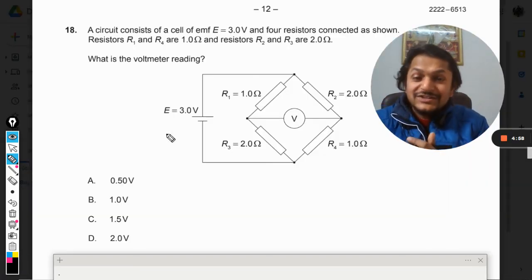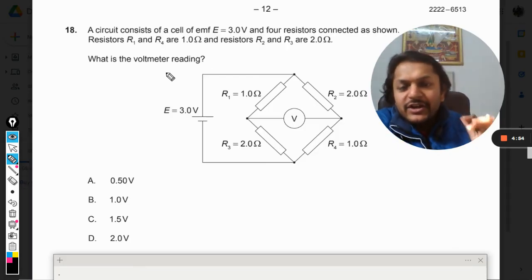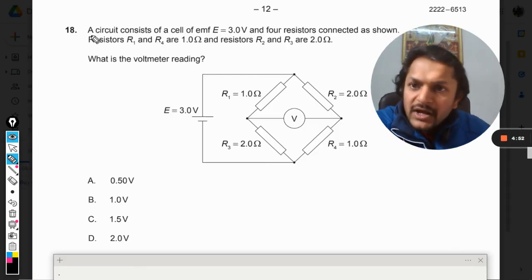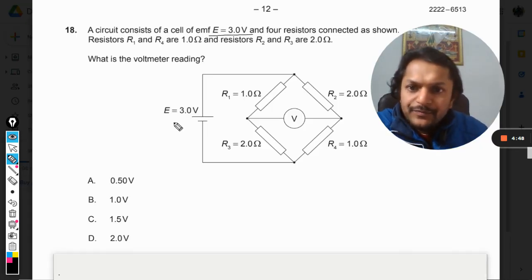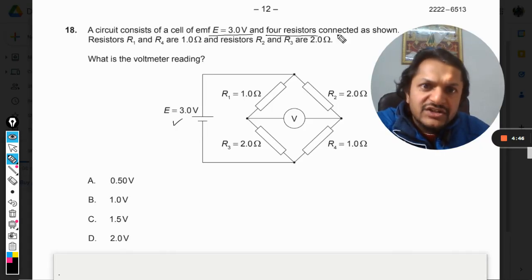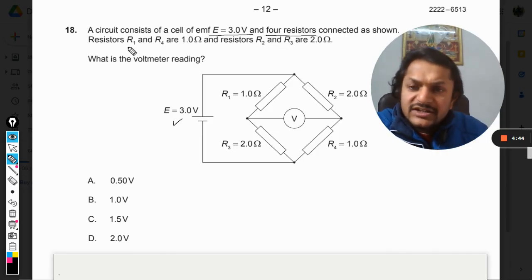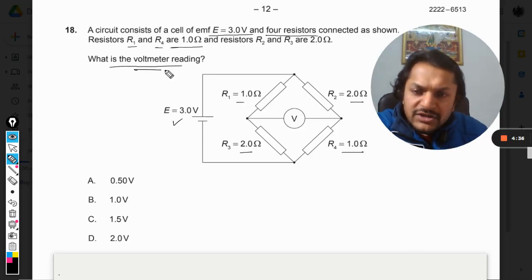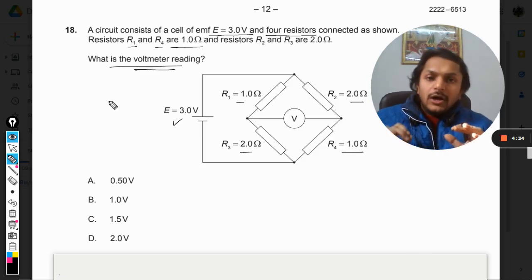Okay dear students, this is another mind-blowing question on your screen. Let us concentrate on how to do this question. A circuit consists of a cell of emf 3 volt and four resistors connected as shown. Resistors R1 and R4 are 1 ohm, and R2 and R3 are 2 ohms. What is the voltmeter reading, my dear students?